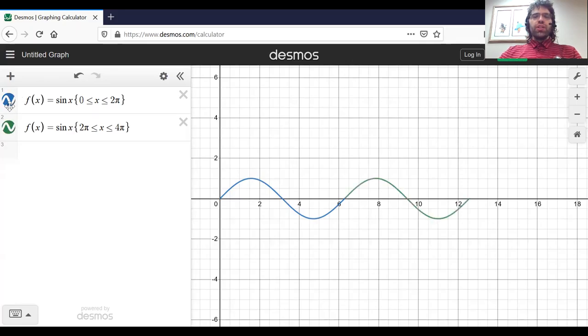And we see that the blue curve and the green curve look identical. This curve, this curve, this curve—they're exactly the same shape, just showing up in different places on the plane.